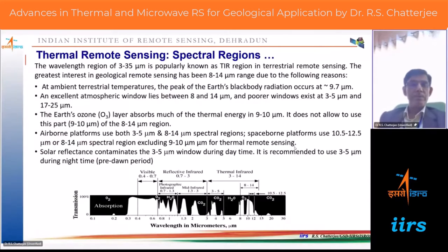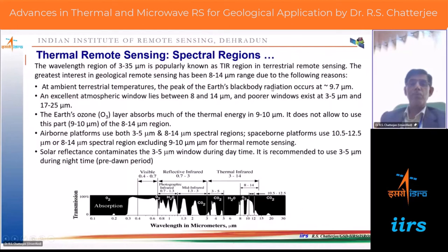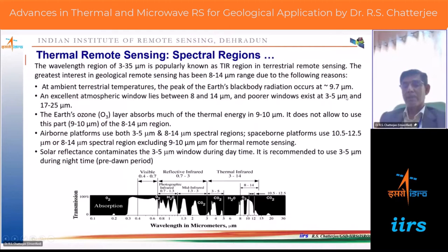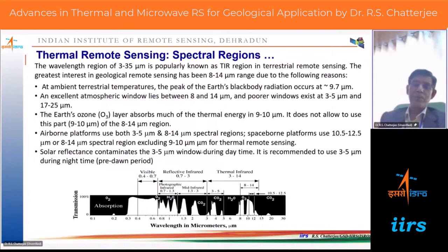In thermal remote sensing, the spectral region of 3 to 35 micrometers is the thermal infrared region for terrestrial remote sensing. Out of this, for geological interest, 8 to 14 micrometers is very widely used. At ambient temperature of the Earth's surface, that is 25 degrees Celsius, the peak of the Earth's blackbody radiation occurs at 9.7 micrometers. So one should sense thermally in and around that particular wavelength. The 9 to 10 micrometer range you avoid because you get sufficient thermal radiation obstructed by the ozone layer.